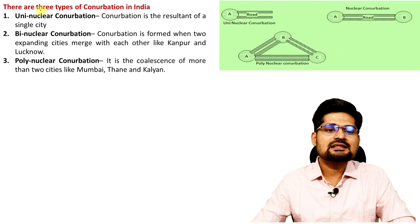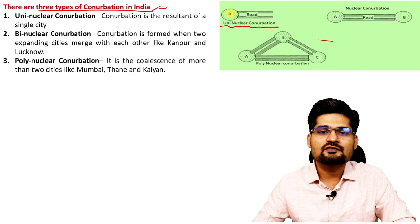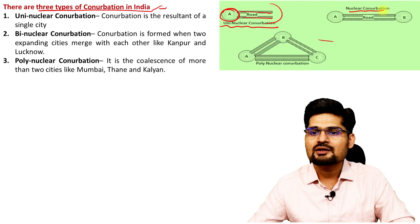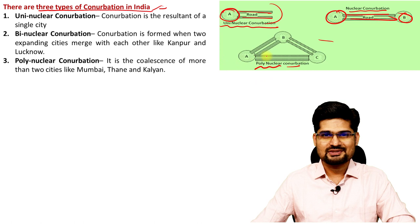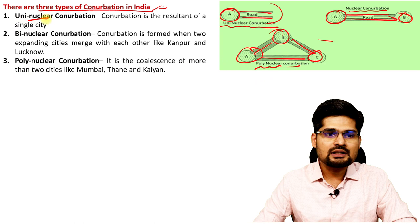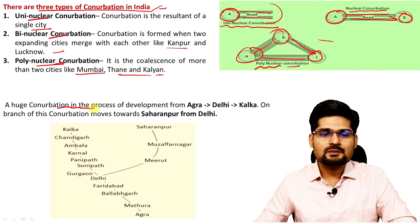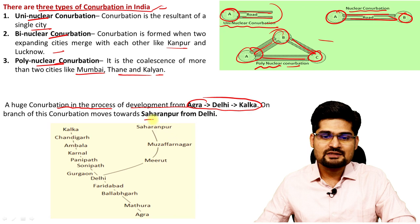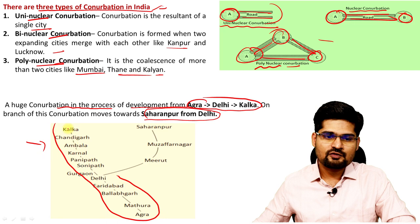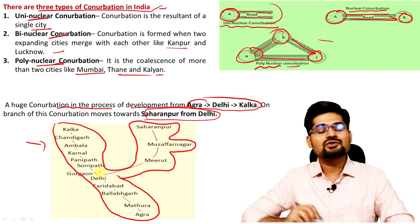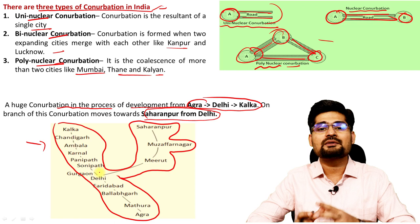There are three types of conurbation in India. Uni-nuclear, where there is one major city with roads connecting outward. Bi-nuclear, where two different nuclei are connected — for example, Kanpur and Lucknow. Poly-nuclear, where different cities combine together — for example, Mumbai, Thane, and Kalyan. A huge conurbation in development is the Agra–Delhi–Kalka region, with another route through Saharanpur–Muzaffarnagar–Meerut, though it is still developing.